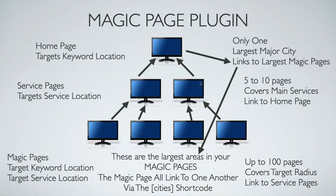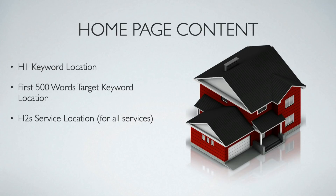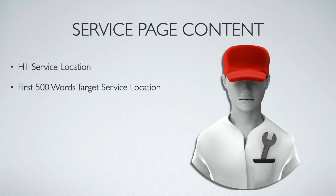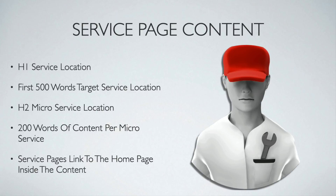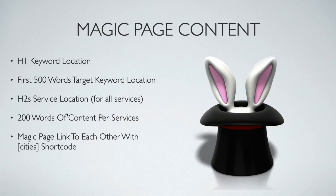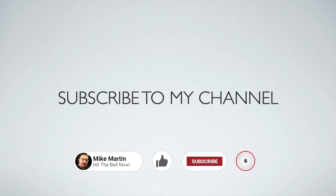Anyone who's followed my PBN training will know I create my PBNs almost identically to this with regards to content. To summarize: home page — H1 keyword location, 500 words, H2 service location, 200 words per service, links to three to five largest major cities. Service pages — H1 500 words targeting service location, H2s for micro service locations, 200 words of content, service pages link to the home page inside the content. Magic page — H1 keyword location, 500 words, H2 service location for all services, 200 words per service, magic pages linked to each other with the city shortcode, and magic pages linked to every service page in the content. Subscribe to the channel and I'll do some more training shortly — thanks very much, cheers, bye.